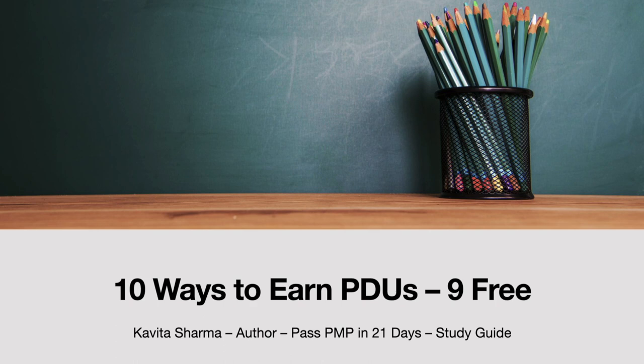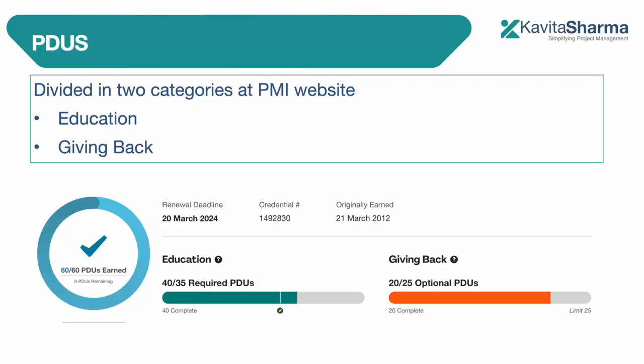If you have earned PMP, CAPM, or ECPP GMP, you need PDUs to carry on with your credential. Typically the cycle is three years and you can earn PDUs to maintain your certification. For example, 60 PDUs are required for PMP. If you log into your dashboard, this is how your dashboard is going to look for PMP or any other certification.